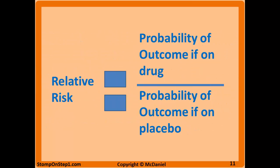Here would be the relative risk in a randomized controlled trial. It would be the probability of the outcome of interest happening if you're receiving the drug divided by the probability of outcome if on the placebo.